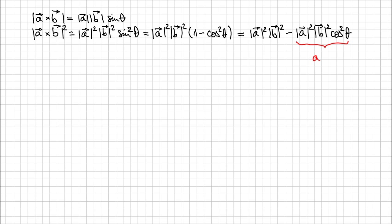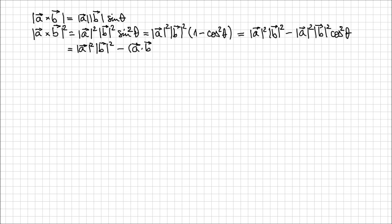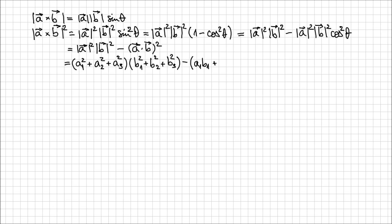That second expression is nothing else than the definition of the dot product between two geometric vectors a and b, at power 2. So I can write it as magnitude squared of a times magnitude squared of b minus the dot product between a and b at power 2. Now I'm going to replace all these values with their algebraic correspondence. Magnitude squared of a is a1² + a2² + a3², and similarly for b. Minus the dot product between a and b, which is a1b1 + a2b2 + a3b3, all at power 2.